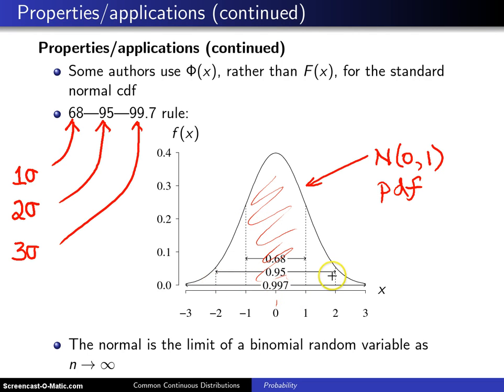If you look between -2 and +2, you will get 0.95. And if you look between -3 and +3, you'll get almost all of the area, which is 0.997.